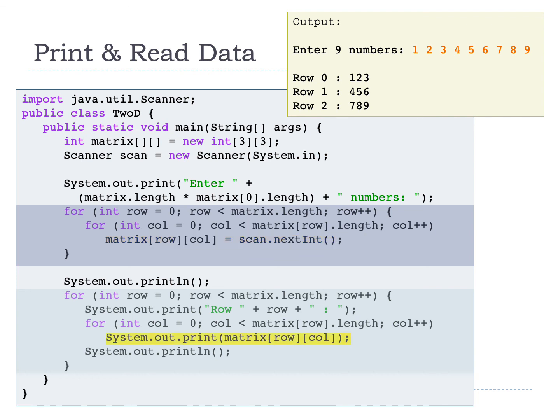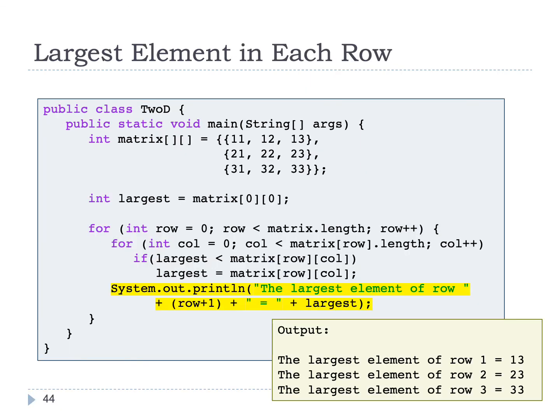If we print out the values by row, it will display row 0 with values 1, 2, 3; row 1 with values 4, 5, 6; and row 2 with values 7, 8, 9. Similarly, to find the largest element within each row, it only compares the column values for each row because System.out.println is within the outer for loop. So for values 11, 12, 13 in the first row, the largest element is 13; in row 2 the largest is 23; and in row 3 the largest is 33.